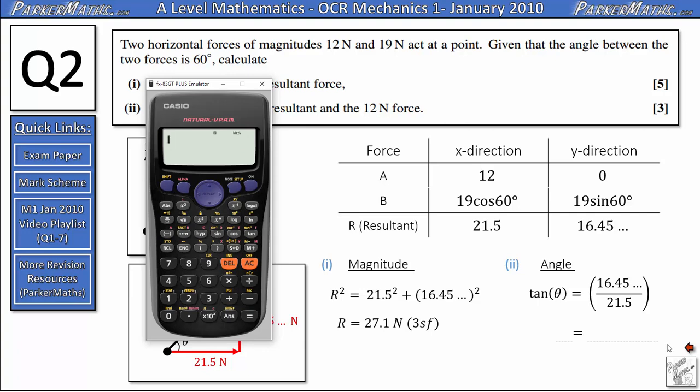So all I need to do now to find theta is inverse tan of 16.45, which I stored in my calculator as A, over 21.5. And that gives me 37.4 to three significant figures.